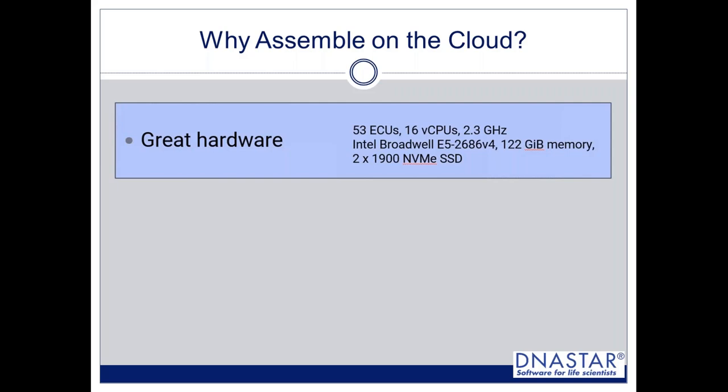So why assemble on the cloud? One reason is that the hardware on the cloud is really excellent. When we first did cloud assemblies five years ago it was pretty expensive and the hardware wasn't that great. Now we have instances with approximately 53 ECUs, 16 virtual CPUs, Intel Broadwell processors, 122 GB of RAM, and lots of disk space — not normal SSDs, but NVMe drives that plug into a PCI slot.